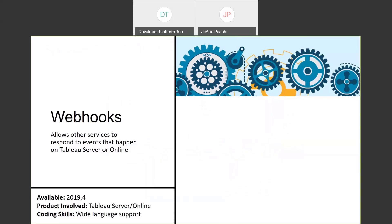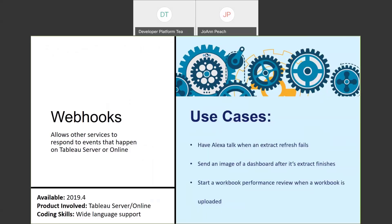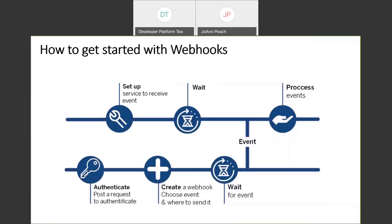Webhooks allow other services to respond to events happening on Tableau Server or Online. Think about notifications — if you are a Tableau Server admin and you use Slack, you can set up a webhook that sends Slack messages every time a new workbook is published or every time an extract fails. To get started with webhooks, you need to authenticate using the same methods as the REST API, then create a webhook and choose the events — such as workbook created or extract refresh failed — and set up a service to receive the events.